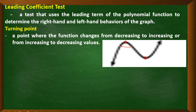On the left hand, the graph falls to the left — that is the left-hand behavior. On the right hand, there is an arrowhead indicating the right-hand behavior. Once it reaches the turning point, it goes down, and then from decreasing it goes up — increasing. That is the turning point.